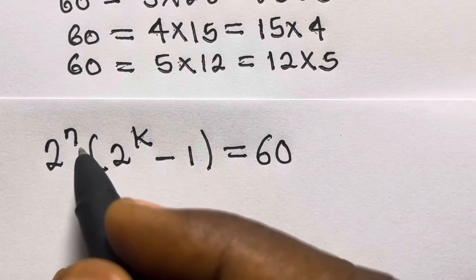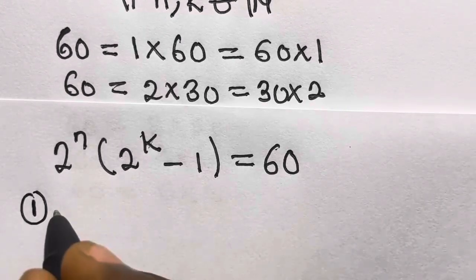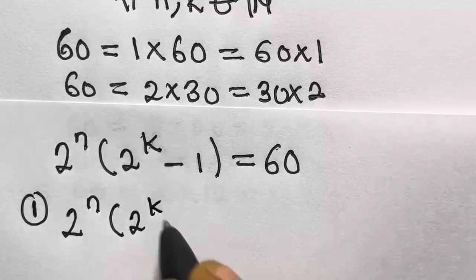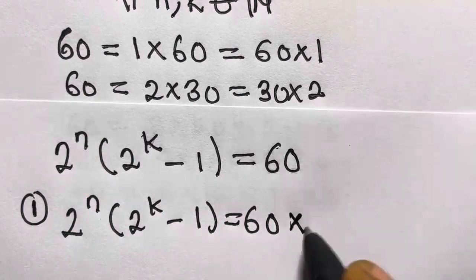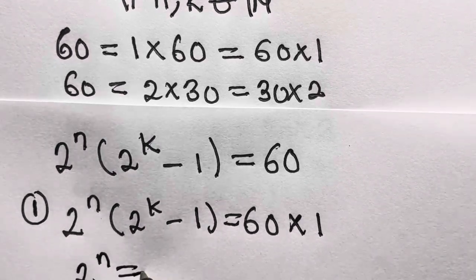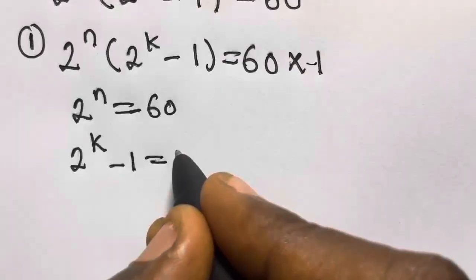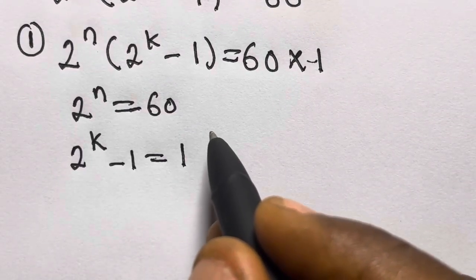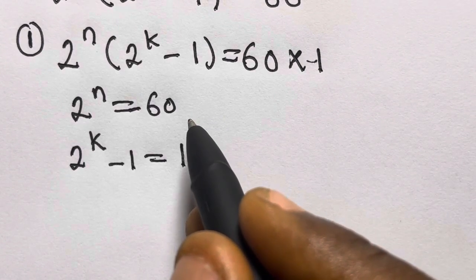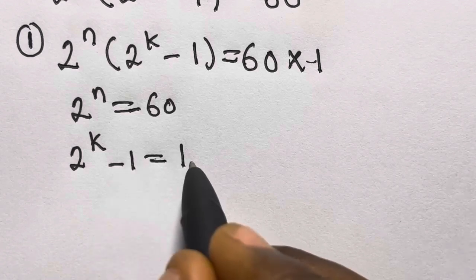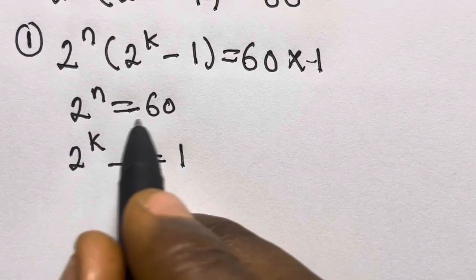Let's try the first factor pair, 60 and 1. We would need 2 raised to the power N times the quantity 2 raised to the power K minus 1 to equal 60 times 1. This would require 2 raised to the power K minus 1 to equal 1, giving K equal to 0, but then 2 raised to the power N would need to equal 60, which is not a power of 2. So we reject this factor pair.